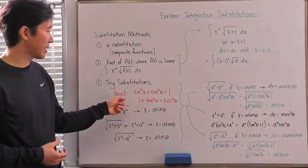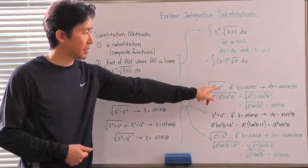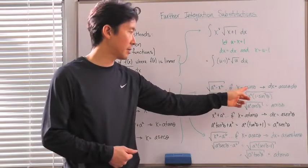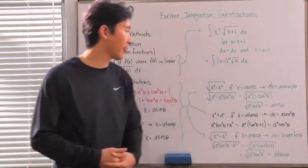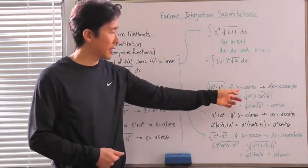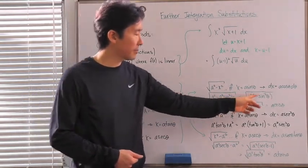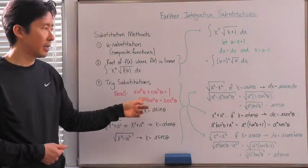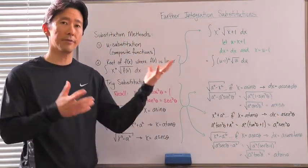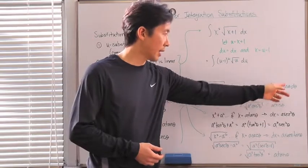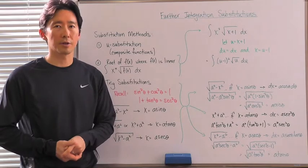Let's see why these substitutions are helpful, for example when there's a dx in the numerator. For the square root of a² minus x², if we let x equal a sinθ, then dx equals a cosθ dθ. By this substitution, we get the square root of a² minus a² sin²θ, which simplifies using our Pythagorean identity to a cosθ. If dx is in the numerator, these cancel and we're left with just dθ, as seen before for the inverse sine function.